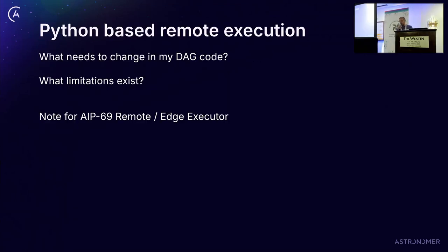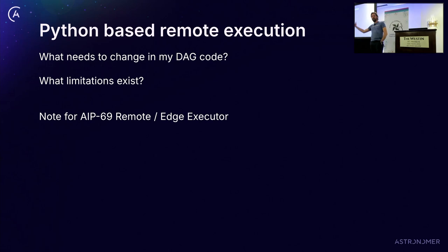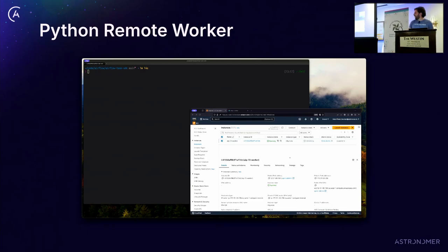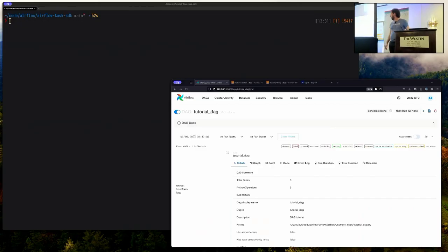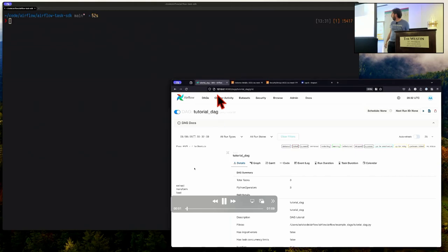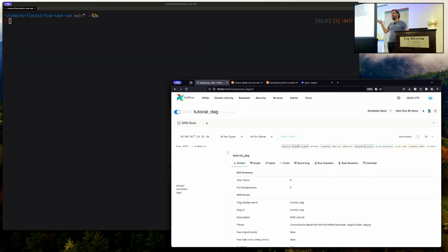How does this work in practice? Rather than just talking, let's show it. I've got an Airflow deployment running on localhost. I wasn't foolish enough to do a live demo, so I pre-recorded it all. This is a local Airflow with a local database. It's a simple ETL — extract, transform, load. And I've got an EC2 instance which I've set up with security groups allowing SSH in, with the only outbound traffic from that node being HTTPS traffic to anywhere.